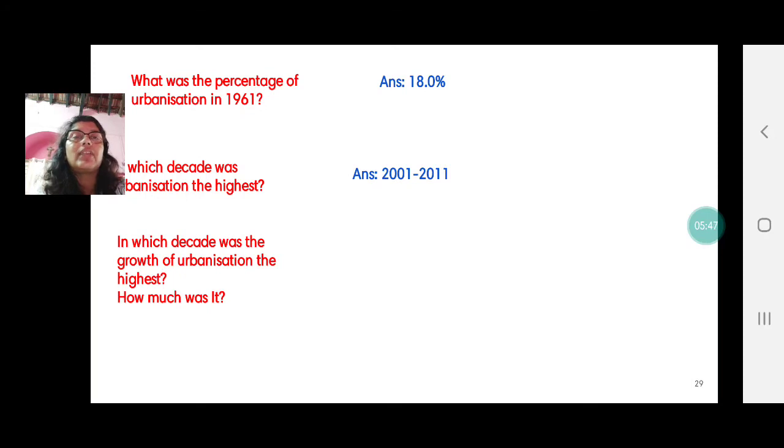Now we have added this additional question, in which decade was the growth of urbanization the highest. So now we have the answer and how much was it, the decade between 1971 to 81. The growth of urbanization was the highest and it was 5.1 percent. Now in case this question comes, we don't know what the evaluator is looking out for because the question is a little confusing.